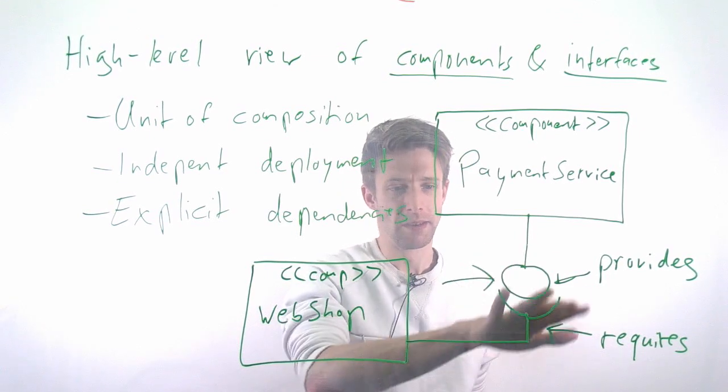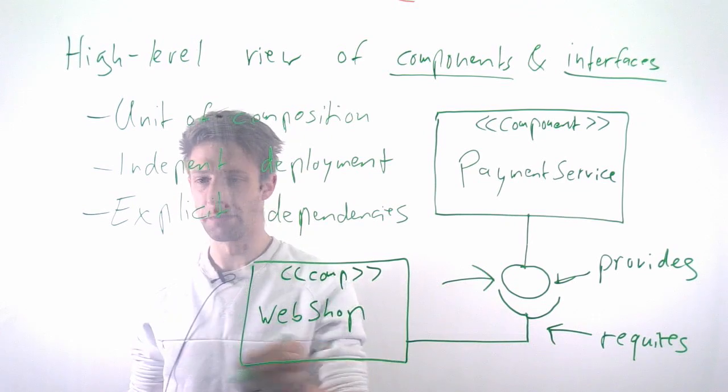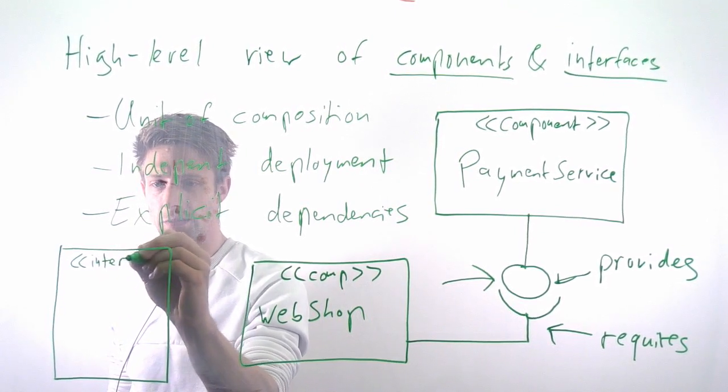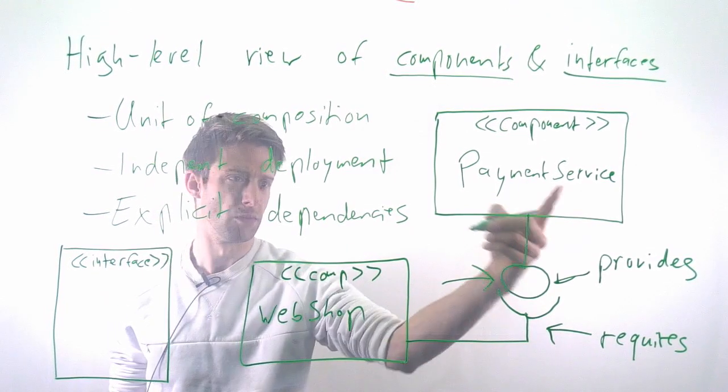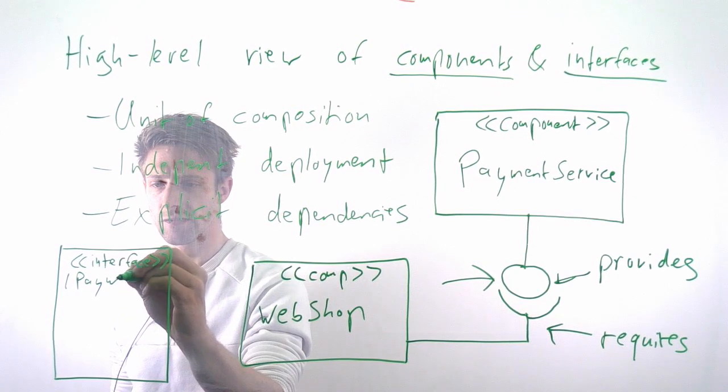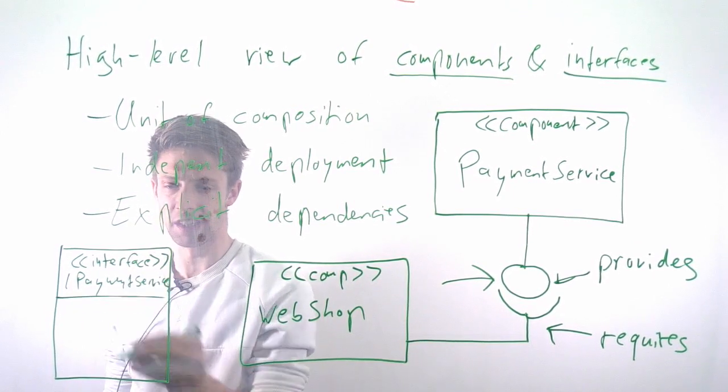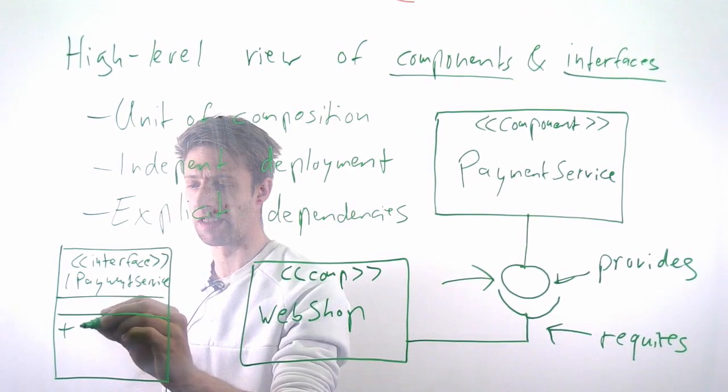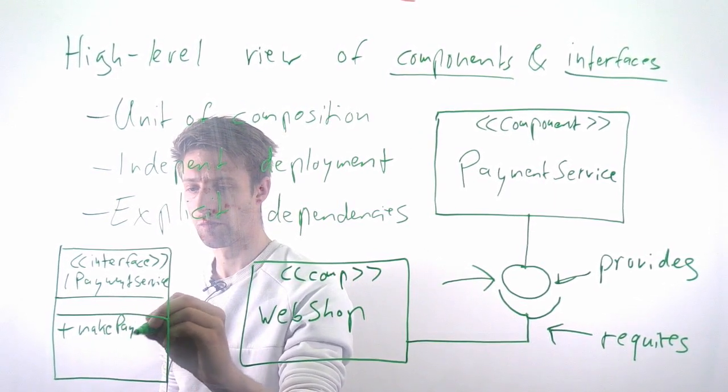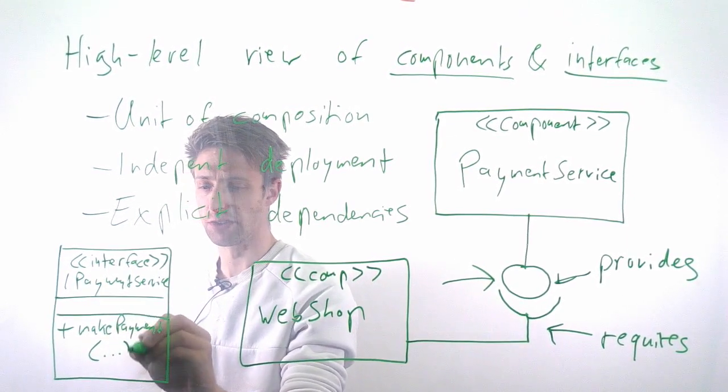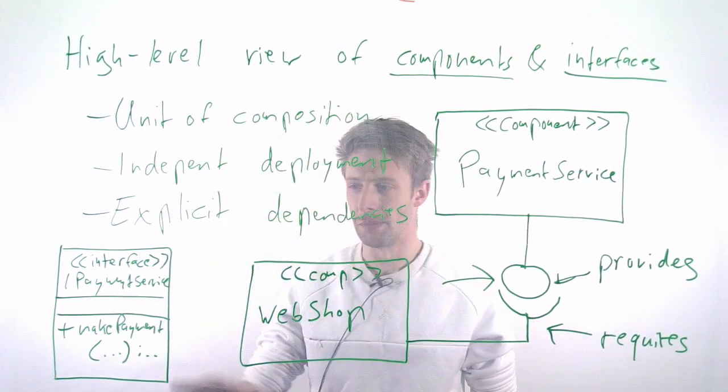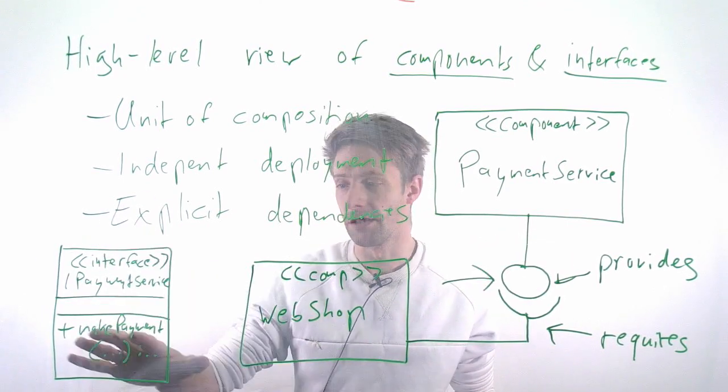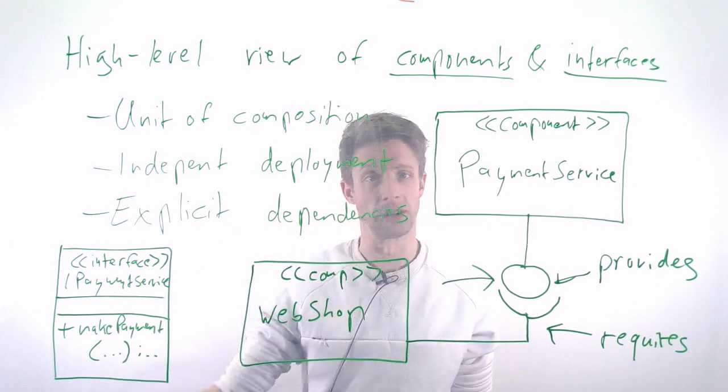You can also go into detail. Instead of this lollipop notation, you can draw an interface which some of you might know from the class diagram in UML. You can have a box with the stereotype interface. We call it, for example, IPaymentService. This is our interface that provides some kind of payment service. Then, as you do in UML with classes and interfaces, you can have methods. For example, there is a public method called makePayment. You could add all sorts of parameters and return values. Instead of the very basic overview with lollipop notation, you can go into detail and discuss how the interface looks, what kind of methods you have, what parameters they need, what they return.